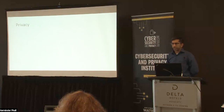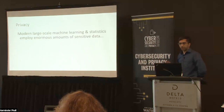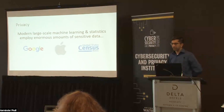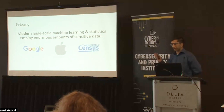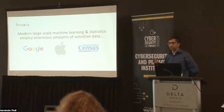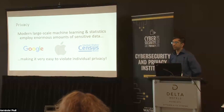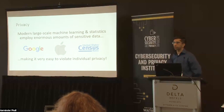To start, I want to motivate things. Nowadays, modern large-scale machine learning and statistics employ enormous amounts of data, and especially sensitive data. Many organizations such as Google, Apple, the U.S. Census Bureau, and many others all touch on data which is sensitive and pertains to individuals. I want to give you a few examples to show that it's really easy to violate individual privacy in a number of different contexts, which in any of these sensitive applications we would want to really avoid.